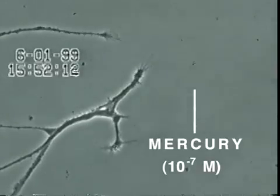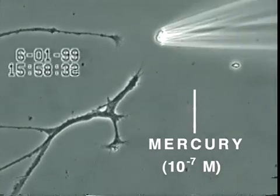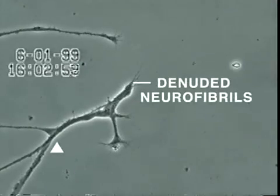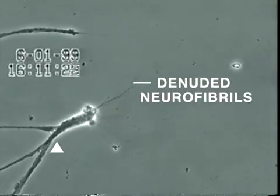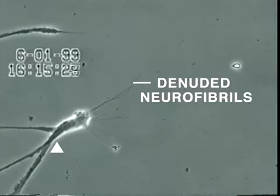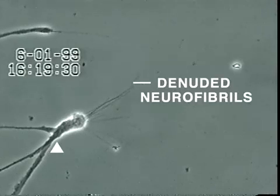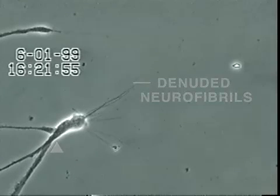Over the next 30 minutes, the neurite membrane underwent rapid degeneration, leaving behind the denuded neurofibrils seen here. In contrast, other heavy metals added at this same concentration, such as aluminum, lead, cadmium, and manganese, did not produce this effect.